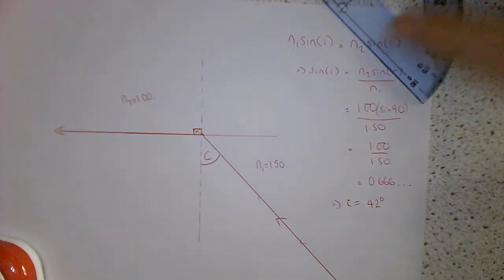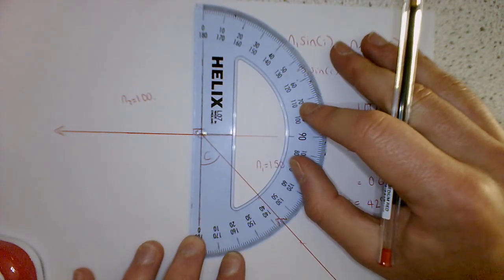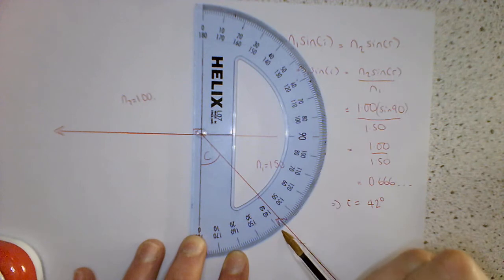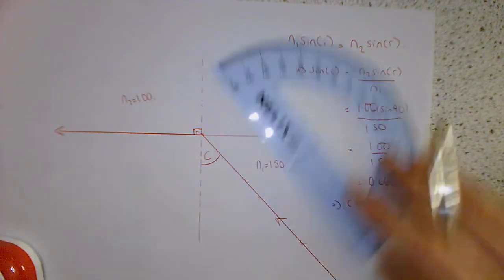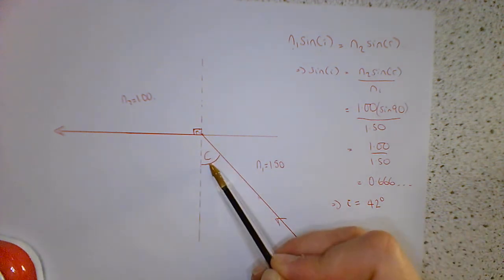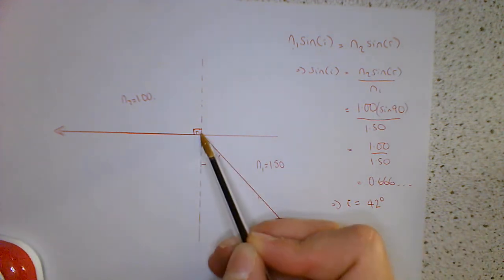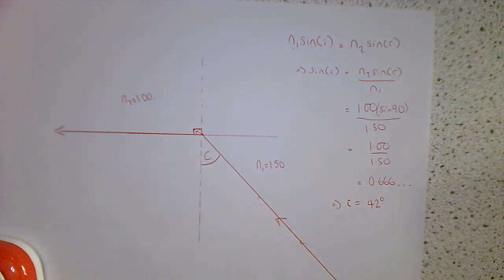So let's get a protractor and actually measure it. And you see here's 40, I reckon that's 43 degrees. So we can see that our Snell's law is able to predict for us what the critical angle is, because the critical angle is the angle of incidence when the light goes along the boundary, or the angle of refraction is 90 degrees.